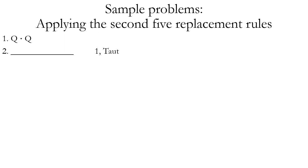Now we're moving from line one of the proof — we have a conjunction Q dot Q. We're using tautology on line one. So what do we get? We get just Q by itself. We also could have used simplification in the same way.